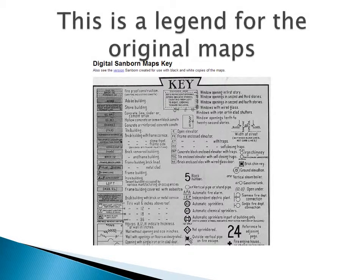This is a legend for the original maps. For historical research, it is interesting to learn what building materials were used. Notice the column on the left, which lists adobe, stone, tile, brick, frame, or an iron building.